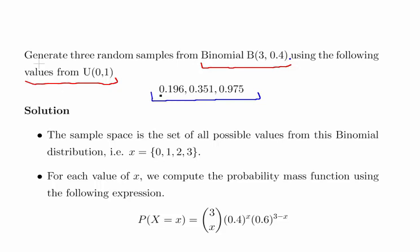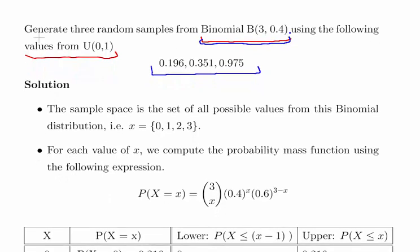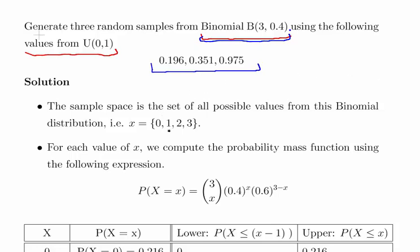First, we have to set in our minds the possible outcomes. Since n equals 3, the number of successes out of three independent trials, the possible values are 0, 1, 2, and 3. That's a statement of the sample space. You can't have an outcome of 4 or minus 1.